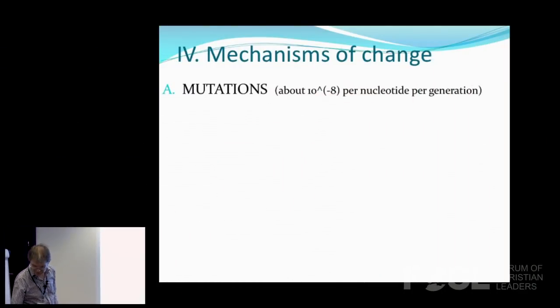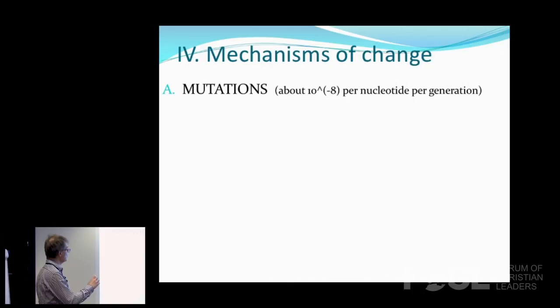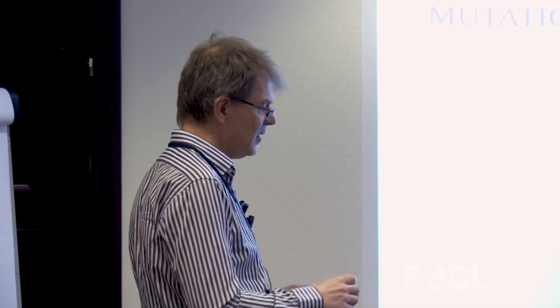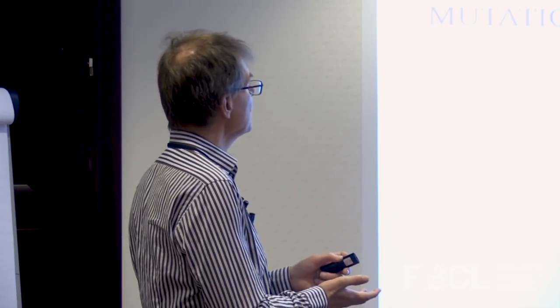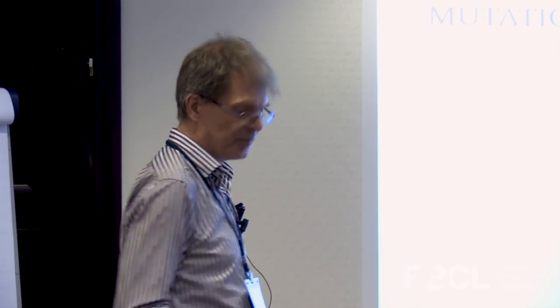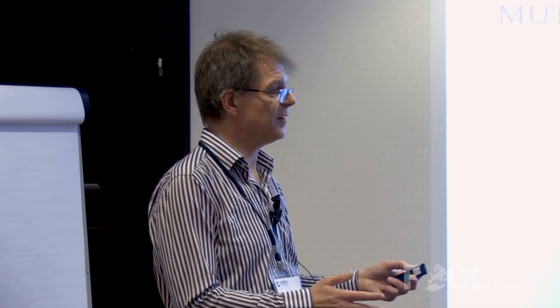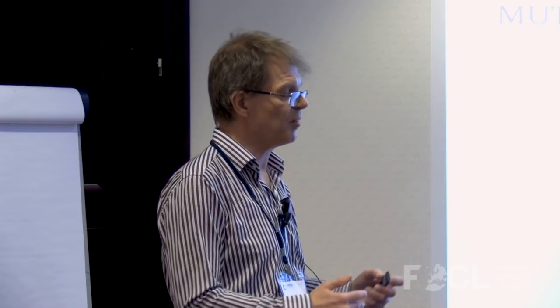Now I will talk about the mechanisms of change. The most well-known are mutations and natural selection. Mutations happen very rarely — on the order of 10^-8 per nucleotide per generation. Going from parent to child, at each nucleotide there is a probability of 10^-8 of a misprint. It's a very small probability, but we also have a very long genome, so on average there are between 10 and 100 misprints each time a sperm or ovum cell is formed. These are germline mutations.